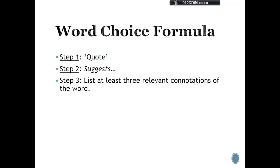In order to answer word choice questions we need to apply the word choice formula. This involves three steps. Step one is to quote the word you've identified. Step two is to write 'suggests', and step three is to list at least three relevant connotations of the word you've chosen.